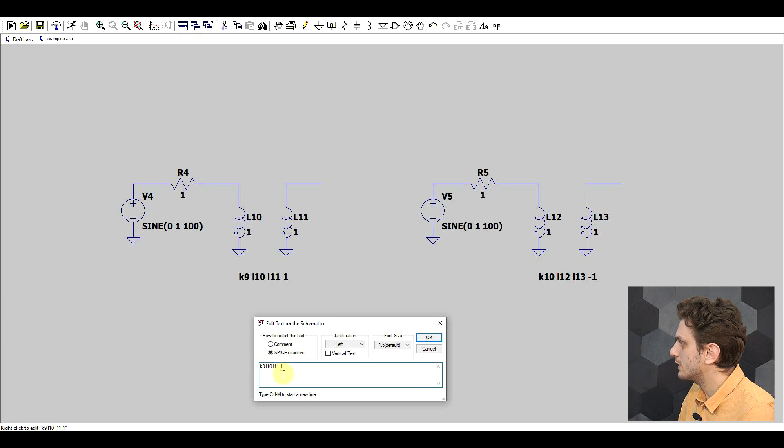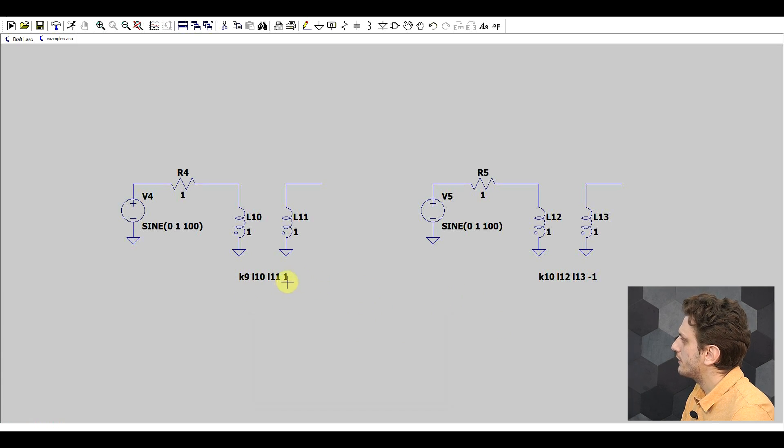Then all of the inductors involved and the coupling factor. Now it's important to mention that there's no point in front of the k. So it's k simple without a point. Now this coupling factor can have values between one and minus one. And what the negative value means is that the second inductor is inversely coupled. So you can either rotate it in the schematic or you put a negative value to it.